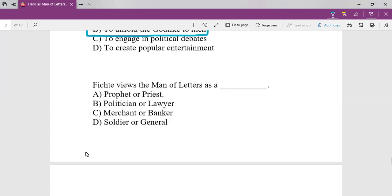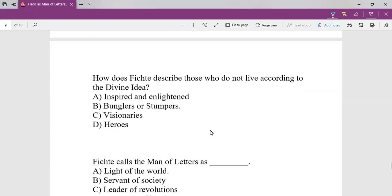Fichte views the man of letters as a prophet. He does the work of a prophet, he does the work of a priest. How does Fichte describe those who do not live according to the divine idea? A man who lives according to the divine idea is a genuine man of letters. A man who does not live according to the divine idea is only a bungler or stumper. Stumper or bungler means one who commits mistake.